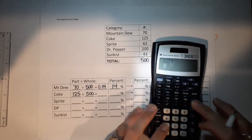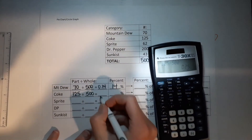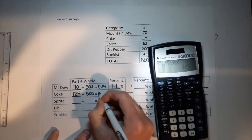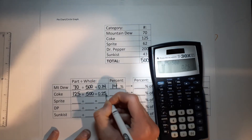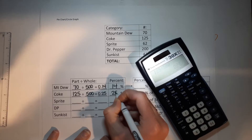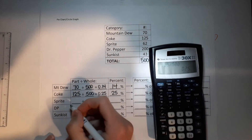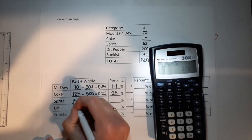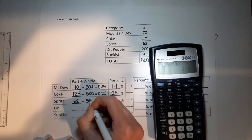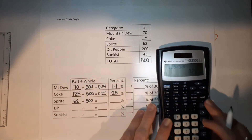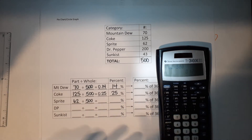Coke: 125 out of 500. Divide that: 125 divided by 500 gives 0.25. Move the decimal over twice — that is 25%.